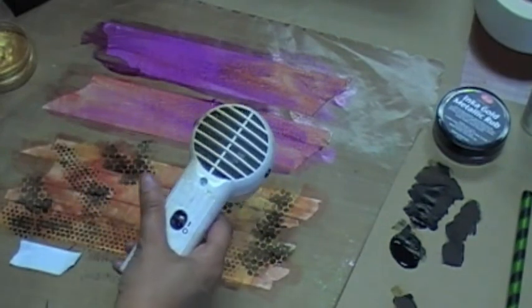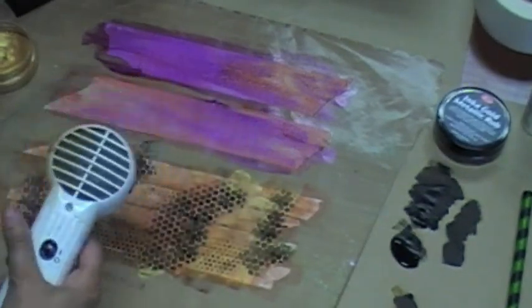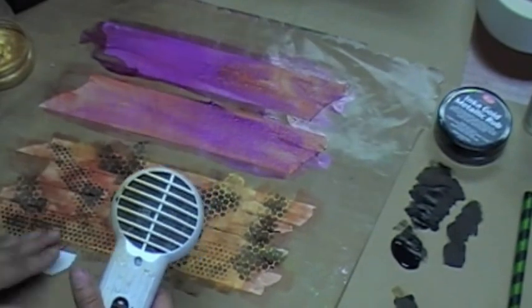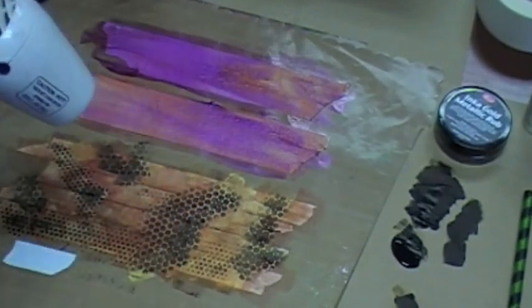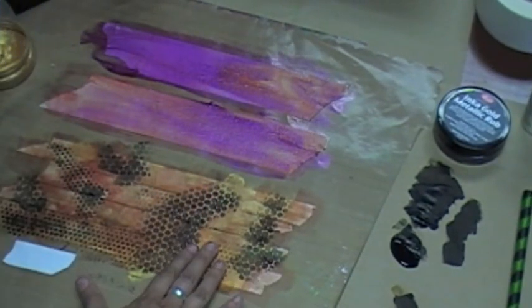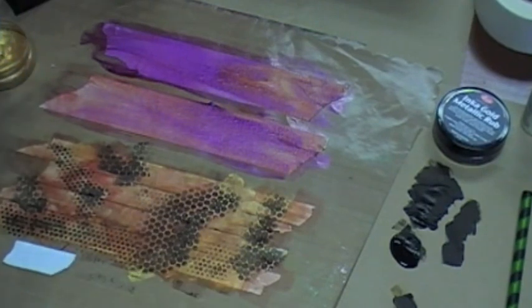So we hit it with our low temp heat gun. It shouldn't take very long, it should just actually take a minute or two to dry. We put such little coats of paint on here that it's not gonna be difficult to get it to a workable surface again.